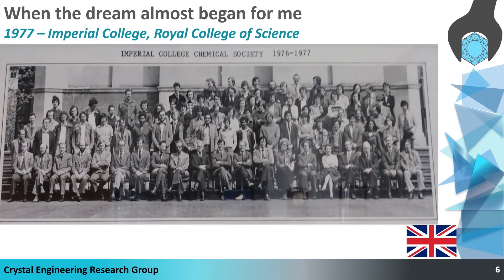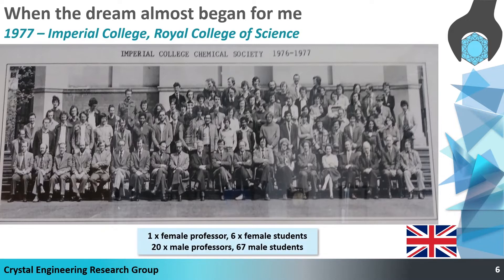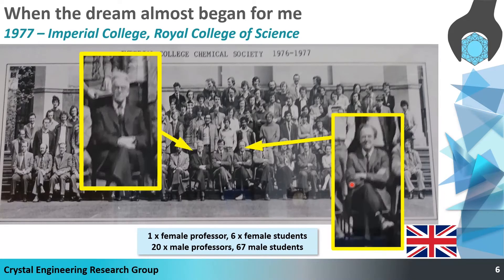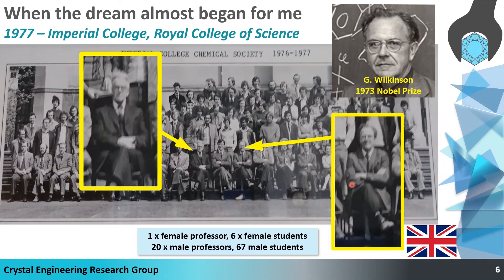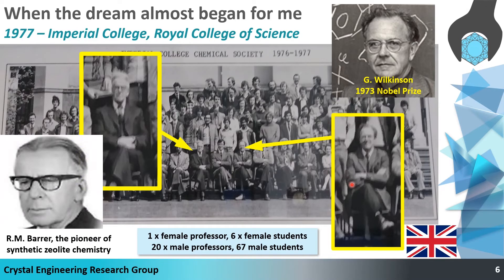From a personal perspective, my chemistry dream started when I was an undergraduate student at Imperial College in 1977. In the front row of a photograph from that time are two distinguished professors: Professor Geoffrey Wilkinson, who won the Nobel Prize in 1973, and Richard Barrer, the pioneer of modern synthetic zeolite chemistry. My first scientific paper was with Wilkinson, and I had to wait a long time before I published a paper related to Barrer's field, which is porous materials. I particularly wanted to mention Barrer because he will appear later in the presentation.